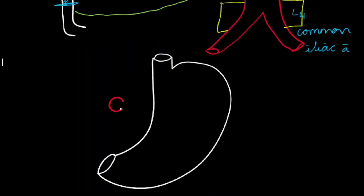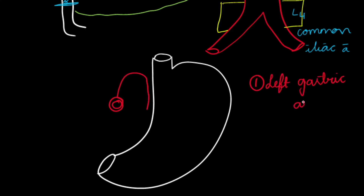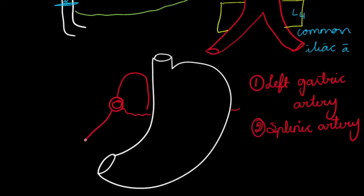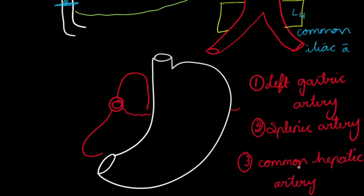The celiac trunk arises at the T12 and L1 level and gives rise to three main branches: the left gastric artery, the splenic artery, and the common hepatic artery. Let us now discuss each artery in detail.